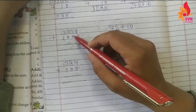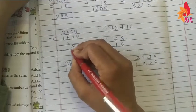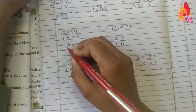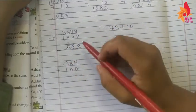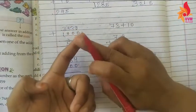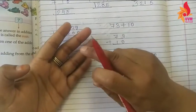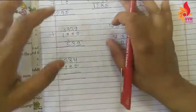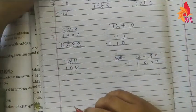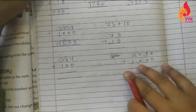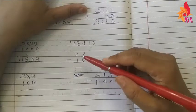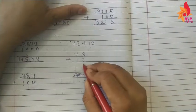Three plus zero is equal to three. Five plus zero is equal to five. Three plus one is equal to four — one, two, three, plus one makes four. Answer aaya: two thousand four hundred thirty-nine — aapke paas answer kya aayega?